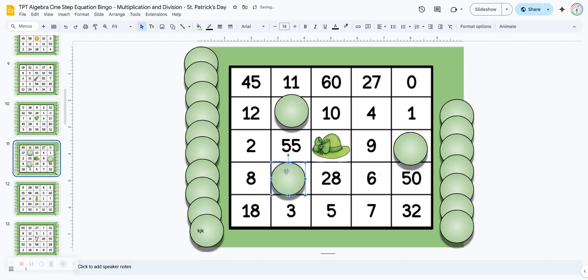Once they get five in a row, they can call out bingo. And if you want to check their answers, just have them move these chips to the side. And that way you can check and see if they're correct.